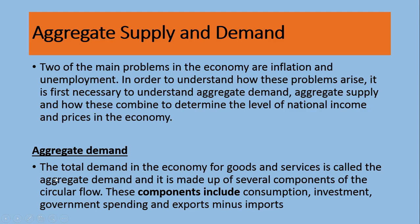Aggregate demand is the total demand in the economy for goods and services. Millions of people living in an economy have certain demands — they spend money on goods and services for personal needs or investment needs. The components of aggregate demand include consumption — households buying furniture, food, clothes, mobiles — and investment, where people spending on machinery and equipment also constitute aggregate demand.